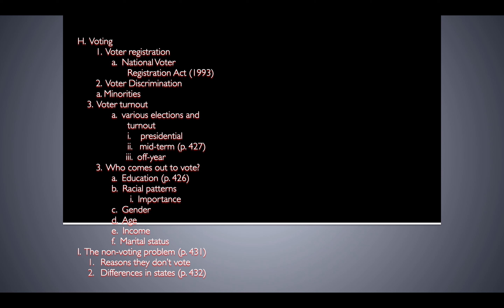The one form of participation that people actually engage in is voting — probably because it's the easiest thing to do and they feel like it actually has an impact. We'll talk about voting next time, including forms of voter discrimination, different types of voter turnout, and why people vote the way they do. Hope you guys are doing well and staying safe.